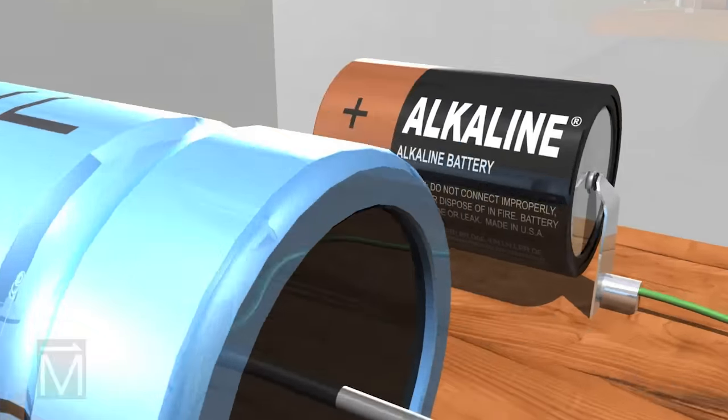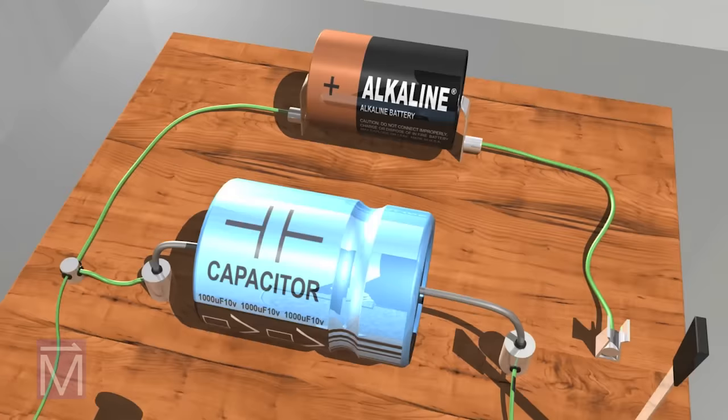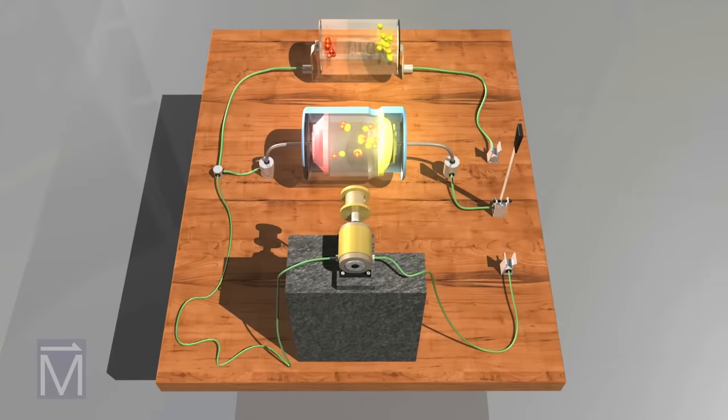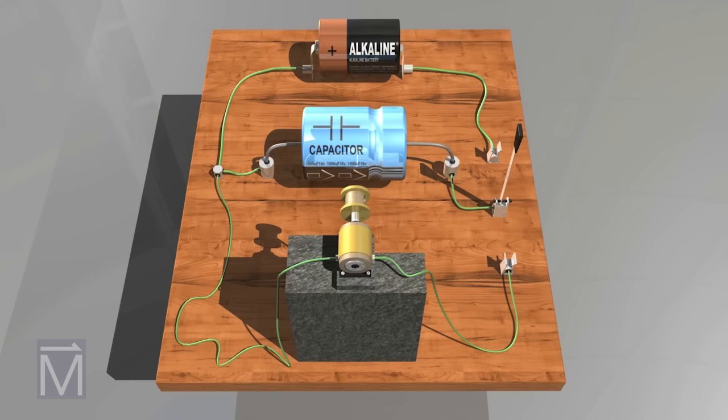A capacitor is similar to a battery in that both store electrical energy, but a capacitor is a much simpler device that can't produce new electrons. It only stores them. However, capacitors can do things a battery can't, as we will show here.